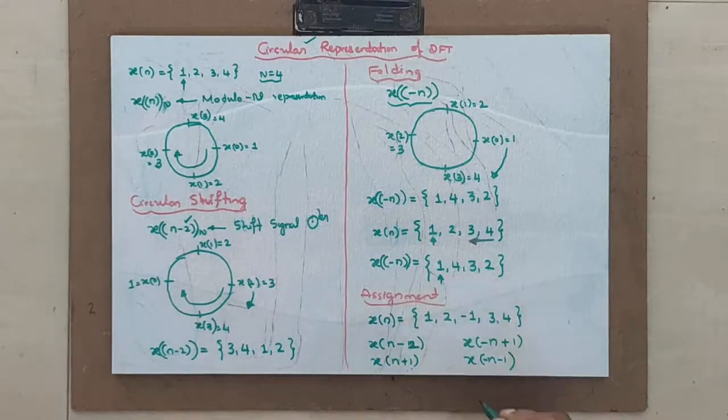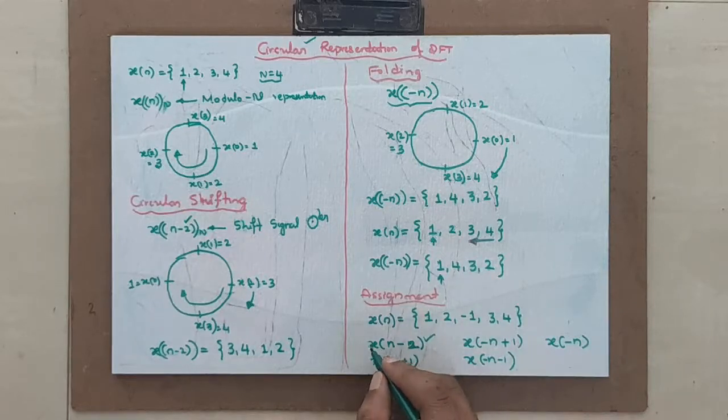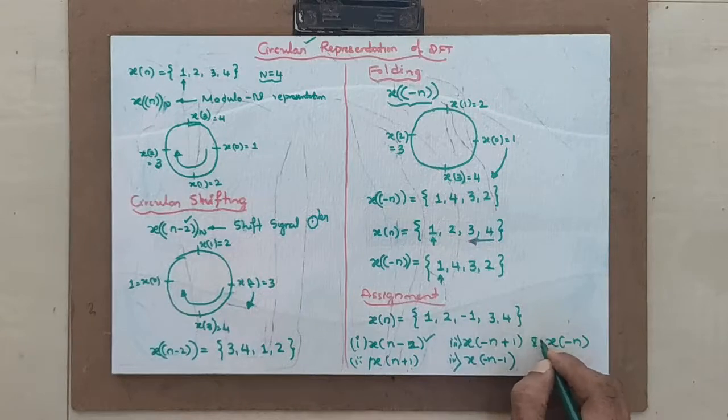Right? At least, I want you to try this. As well as another one, x of minus n. I want you to try at least this. And, 2, 3, 4, and 5. I want you to give me the answer.